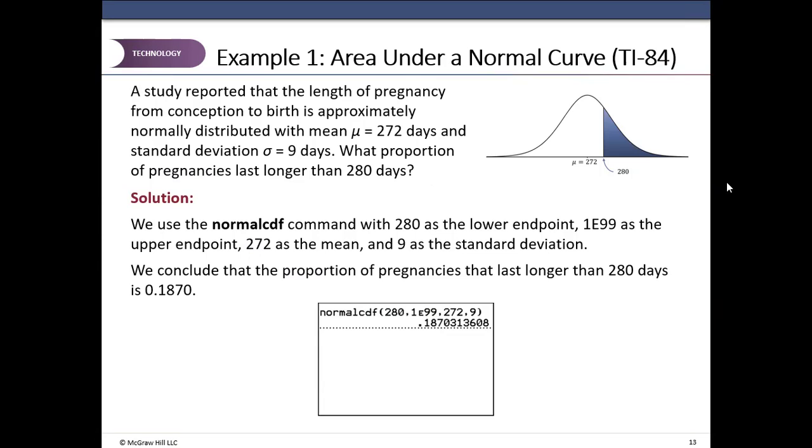And the upper bound or upper boundary is a very large number on the right which, as I explained before, is 1E99. Then second button and comma button. Where is the comma button? On top of the seven button. That gives you the E. This E is exponent. And then you type 99. That means one followed by 99 zeros, a very large number on the right. The mean is no longer zero. It is not a standard normal curve. Mean is 272. And the standard deviation is 9. And I go down to paste and hit enter and enter twice. And the area is 0.187 on the right of 280 under the normal curve. What does it mean? Approximately 18.7 percent of the pregnancies will last more than 280 days.